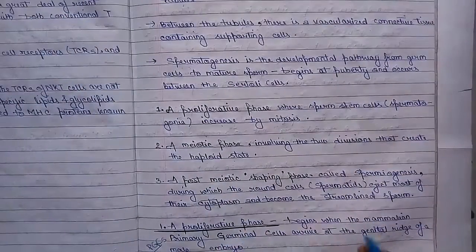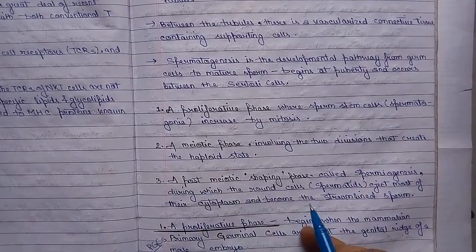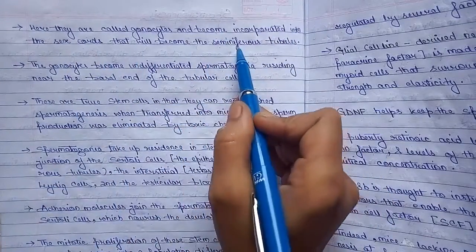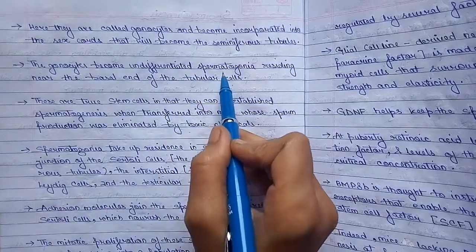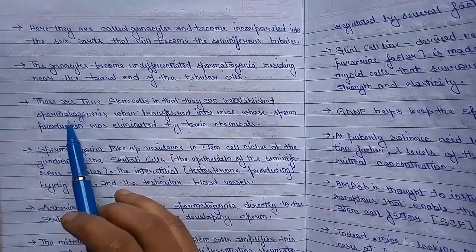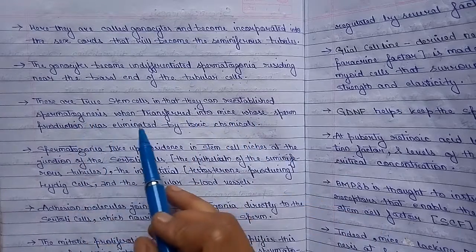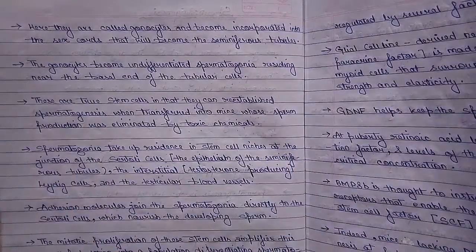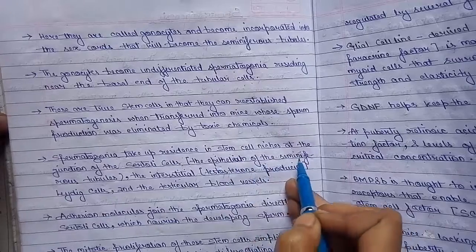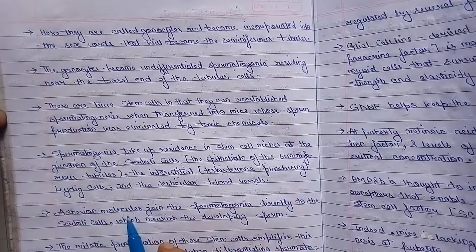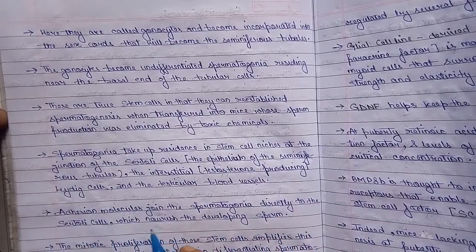The proliferative phase begins when mammalian primary germinal cells arrive at the genital ridge of a male embryo. Here they are called gonocytes and become incorporated in the sex cords that will become the seminiferous tubules. The gonocytes become undifferentiated spermatogonia residing near the basal end of the tubular cells. These are true stem cells, as they can reestablish spermatogenesis when transferred into mice whose sperm production was eliminated by toxic chemicals. Spermatogonia take up residence at the junction of Sertoli cells, the epithelium of the seminiferous tubules, the interstitial testosterone-producing Leydig cells, and the testicular blood vessels. Adhesion molecules join the spermatogonia directly to the Sertoli cells, which nourish the developing sperm.